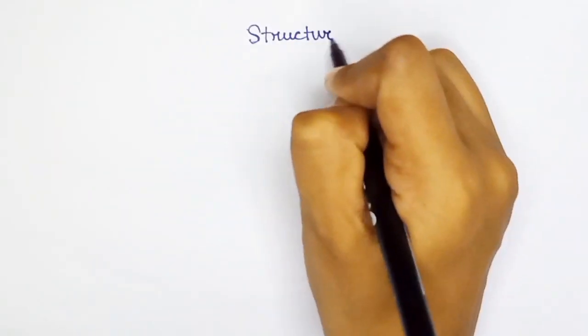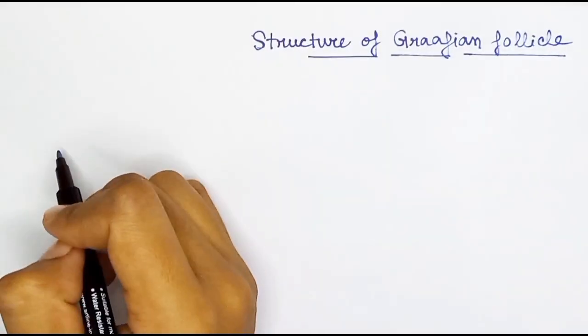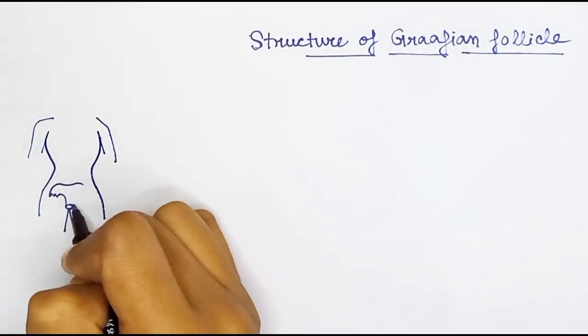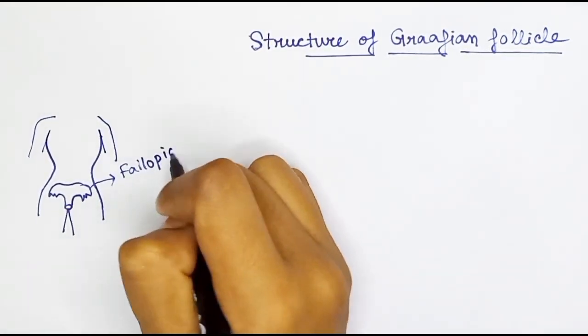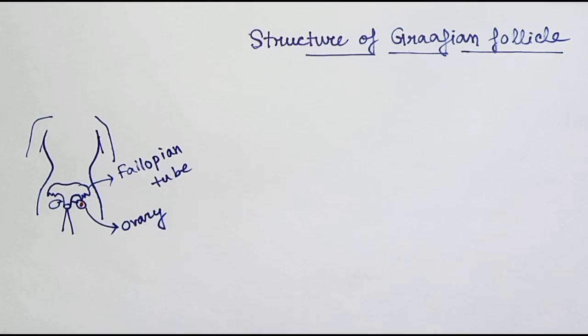Today we are talking about the structure of Graafian follicle. Graafian follicle is the most mature follicle which contains the ovum. So where is it located? It is located in the ovaries of the female. We are talking about the mammals.